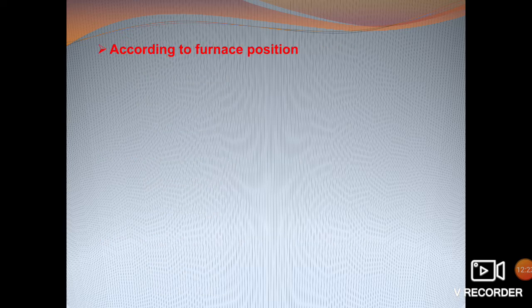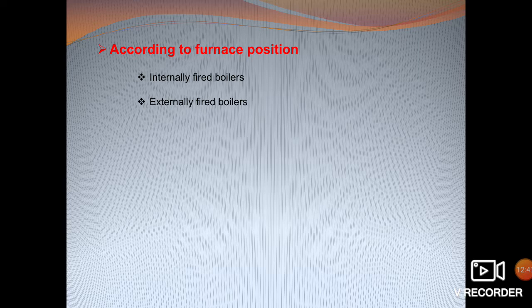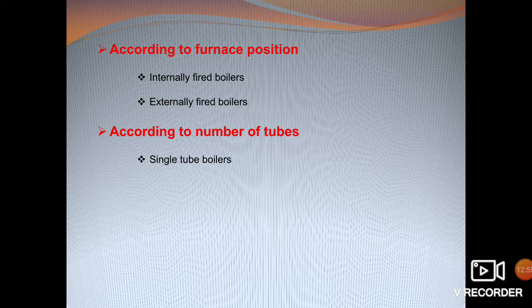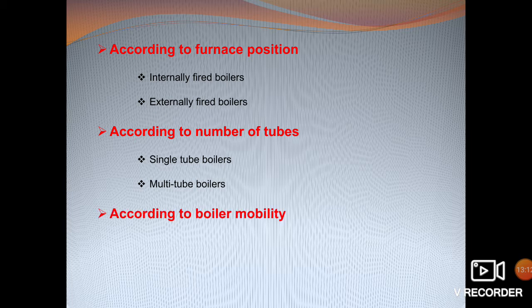According to furnace position, boilers are classified as internally fired boilers, where the furnace is inside the drum or shell, and externally fired boilers, where the furnace is outside the drum. According to the number of tubes used, there are single tube boilers — having only one fire tube or water tube — and multi tube boilers, which have two or more fire or water tubes.